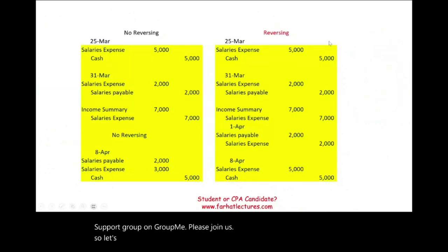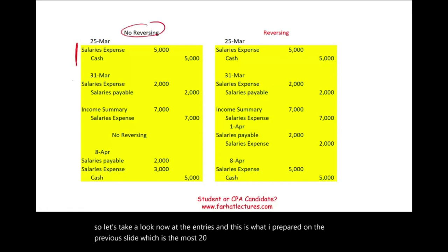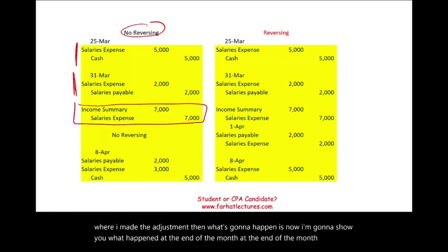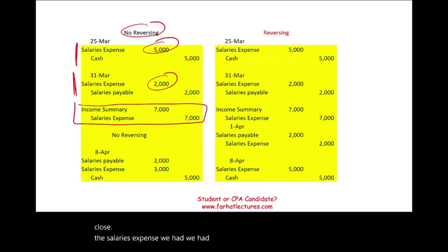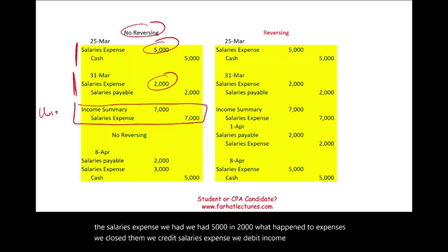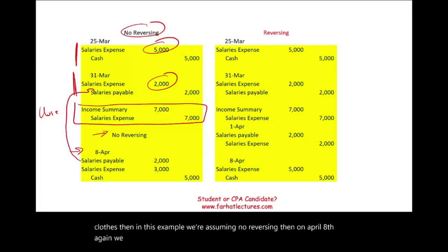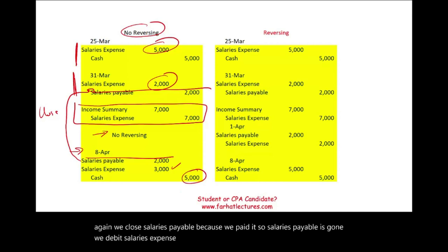Let's look at the entries now. On March 25th — no difference — we debit salaries expense and credit cash. March 31st adjusting entry is the same: debit salaries expense, credit salaries payable. At month-end we close expenses: we had $5,000 and $2,000, so we credit salaries expense and debit income summary. In this no-reversing scenario, on April 8th we debit salaries payable $2,000, debit salaries expense $3,000, and credit cash $5,000.